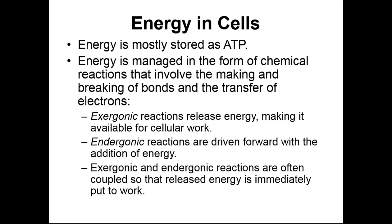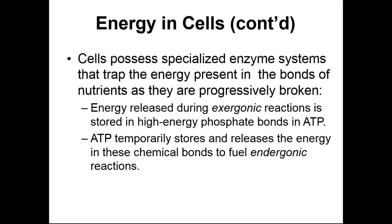Generally speaking, our exergonic chemical reactions are going to be catabolic, and endergonic chemical reactions are going to be anabolic in nature. Exergonic reactions usually occur when we take a larger molecule and break it down into smaller molecules, while endergonic reactions occur when we take smaller molecules and connect them to make bigger molecules. Our cells have very specialized enzymes that trap energy in the bonds of nutrients as we break down molecules, storing that energy in the terminal phosphate bond of ATP — between the second and third phosphate — so in between those high-energy phosphate bonds. ATP will temporarily store energy in that high-energy phosphate bond and then release it later at a different chemical reaction to fuel those endergonic reactions.